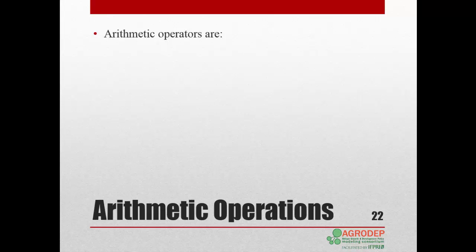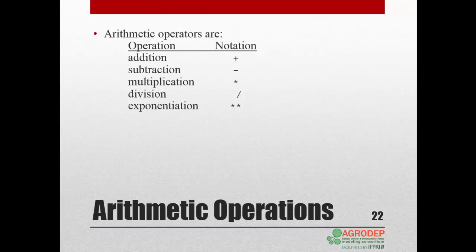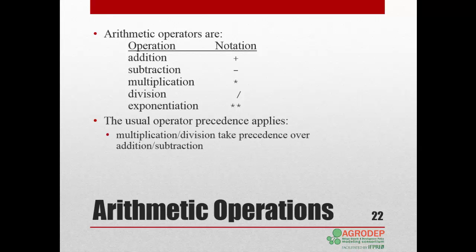The following list includes arithmetic operators used in GAMS. Addition is noted by the plus sign. Subtraction by the minus sign. Multiplication by the star or asterisk. Division by a slash. Exponentiation by a double star, not separated by a space. The usual operator precedence applies. Multiplication and division take precedence over addition and subtraction. Exponentiation takes precedence over multiplication and division.